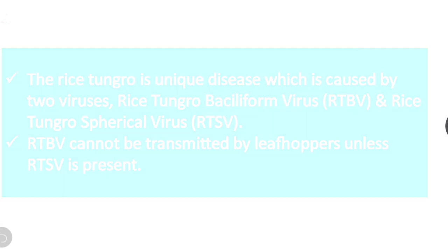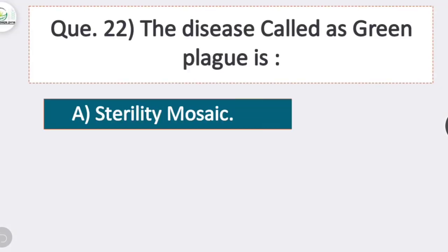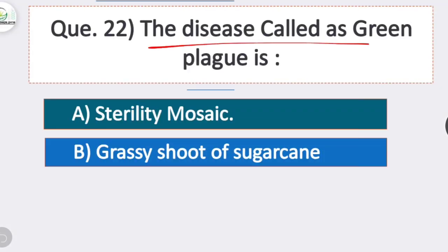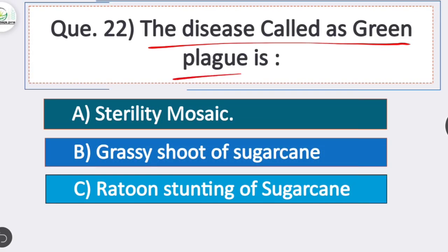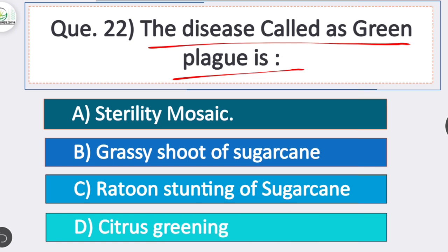Question 22: the disease called the green plague is? Option A is correct — sorghum mosaic. Sorghum mosaic is also called the green plague.